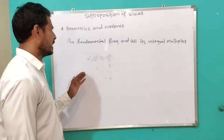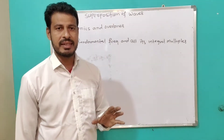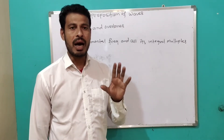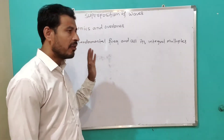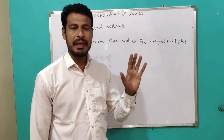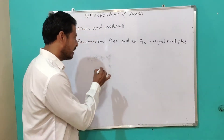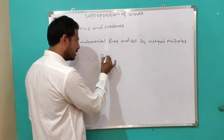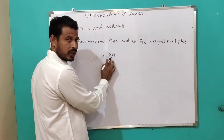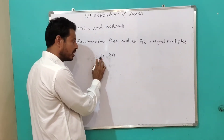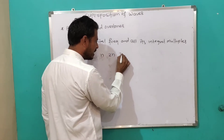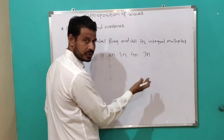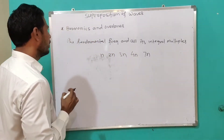Now, what is meant by harmonics? The fundamental frequency and all its integral multiples are called harmonics. For example, if n is the fundamental frequency, then 2n is the second harmonic, 3n is the third harmonic, 4n is the fourth harmonic, and 7n is the seventh harmonic. This is about harmonics.